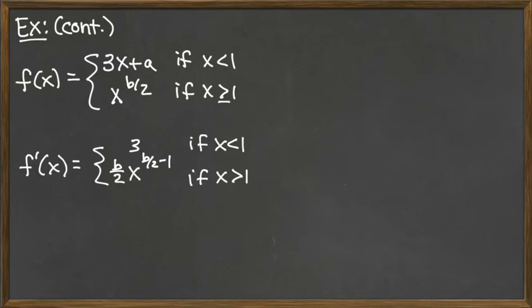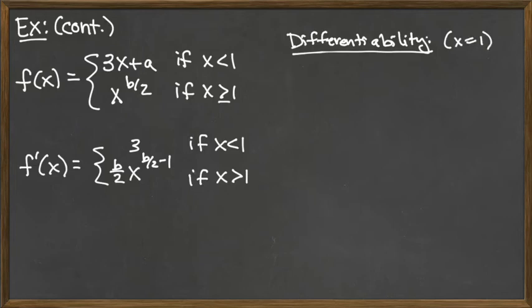And so that's what the derivative would be for each one of the individual pieces, and we don't have any trouble with any of those places except possibly at x equals 1, that switch over in the domain. So differentiability. And again, we're looking at at x equals 1. So what ends up happening is we can, we know that to the left of 1, the derivative is 3, and we know to the right of 1, we kind of have a weird looking derivative.